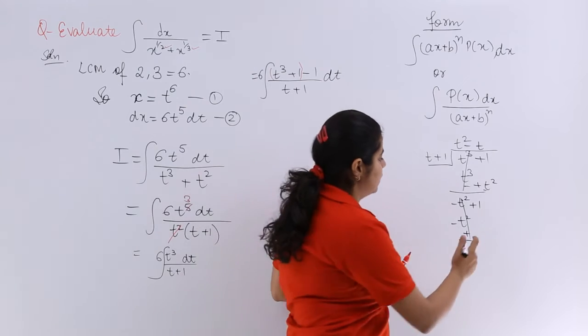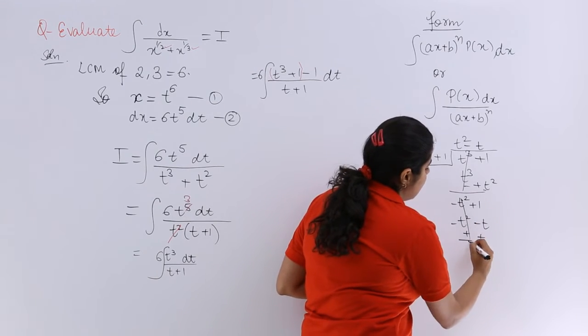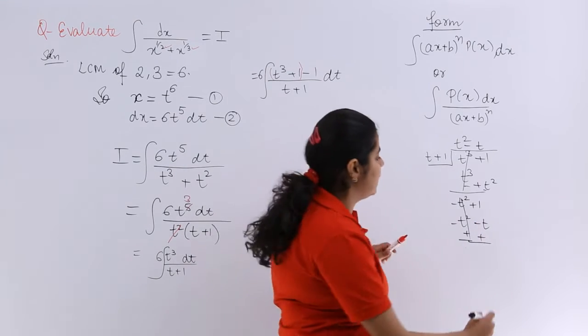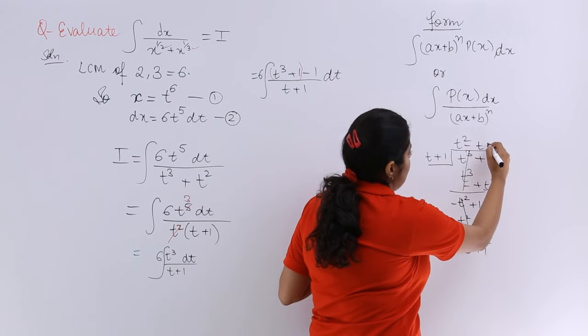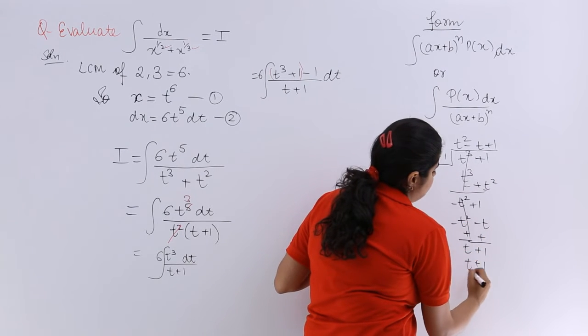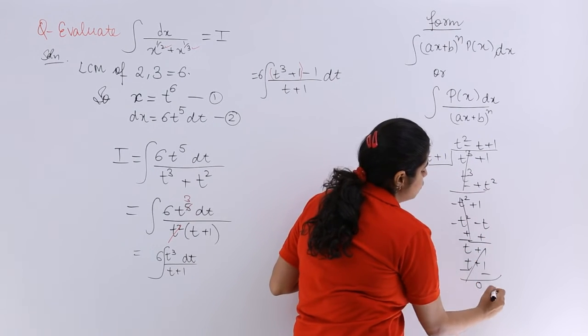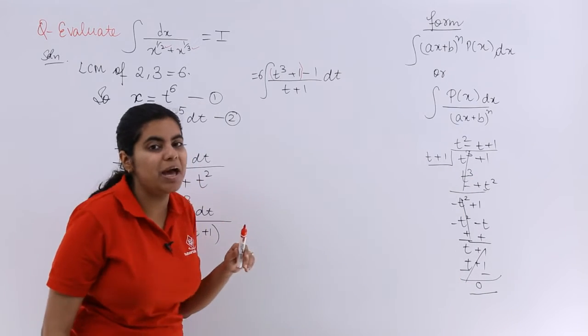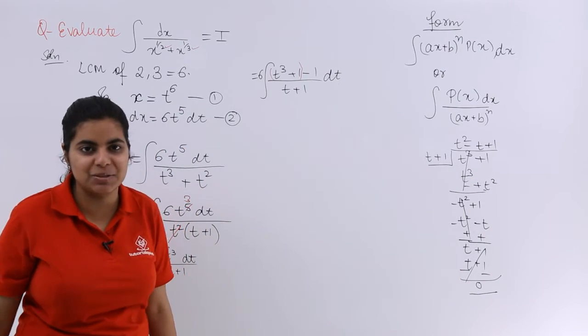And when you have minus t over here, the moment it has to come down, it will be changing its sign. So it will become t plus 1. And here also it is plus 1. So it is t plus 1. And in short, you will be cancelling it to obtain the question t square minus t plus 1. Completely divisible.